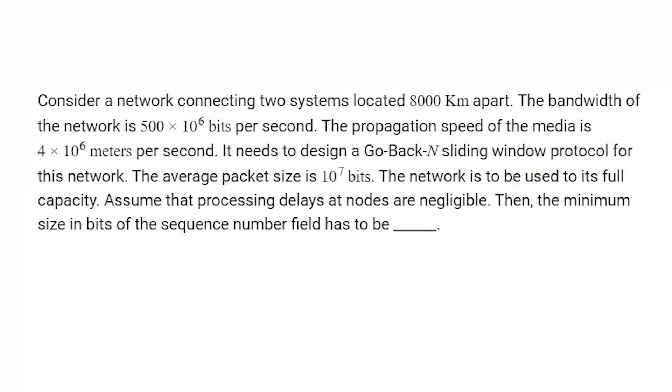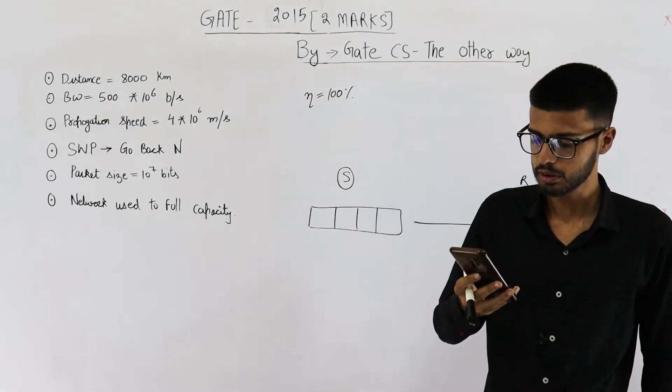Consider a network connecting two systems located 8000 kilometers apart. The bandwidth of the network is 500 × 10^6 bits per second. Propagation speed of the media is 4 × 10^6 meters per second. It needs to design a go back N sliding window protocol for this network. The average packet size is 10^7 bits. The network is used to its full capacity. Assume that the processing delays at nodes are negligible. Then the minimum size in bits of the sequence number field has to be.